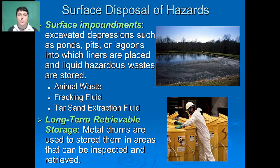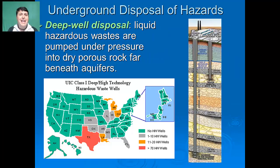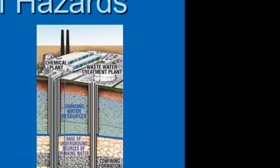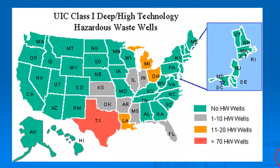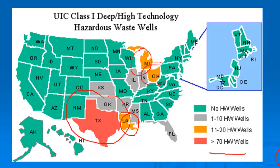Another way to store hazardous waste on the surface is through long-term retrievable storage, in which waste is placed into metal drums and put into large warehouses where we can continuously inspect and retrieve them if necessary. If we don't want to store hazardous waste on the surface, one underground method is deep well disposal, in which liquid hazardous waste is pumped under pressure into dry, porous rock far beneath our aquifers. There are many such wells in places like Texas, Louisiana, Michigan, and Ohio, whereas in our own state of Virginia there are no deep wells.